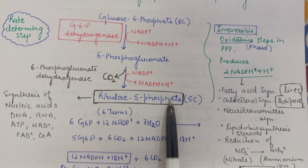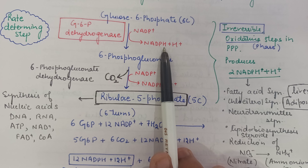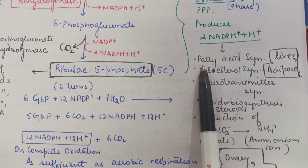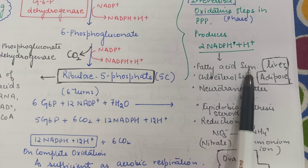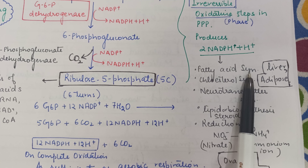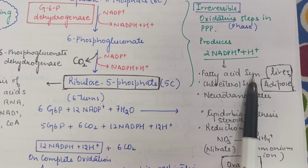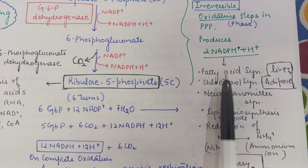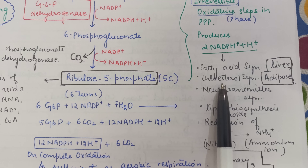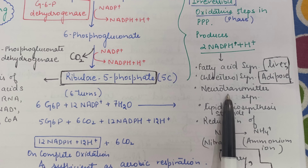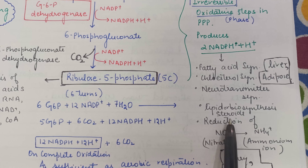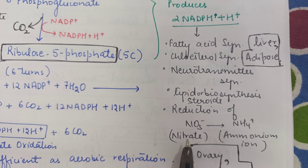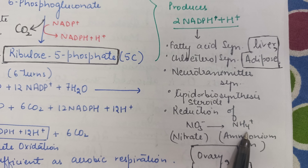Now, the NADPH produced in the oxidative phase is very important for biosynthesis. It helps in fatty acid synthesis, cholesterol synthesis, neurotransmitter synthesis, lipid and steroid synthesis, and also plays a very important role in the reduction of nitrate into ammonium ions.